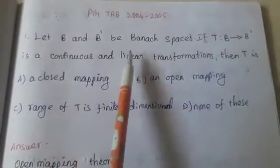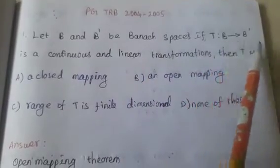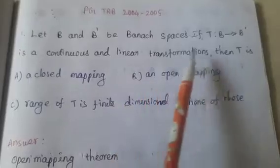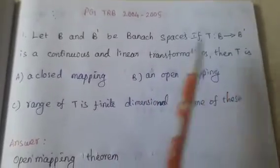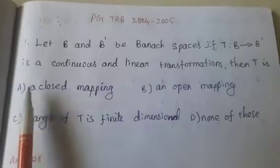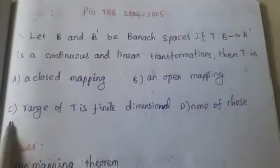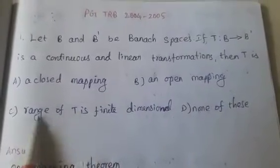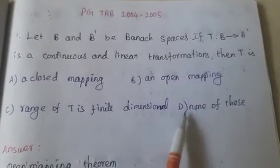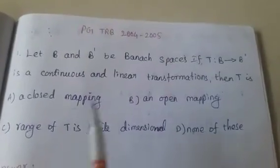Let B and B' be Banach spaces. If T from B tends to B' is a continuous and linear transformation, then T is: Absent A, Closed Mapping; Absent B, Open Mapping; Absent C, Range of T is Finite Dimensional; Absent D, None of These. This is Question 10.